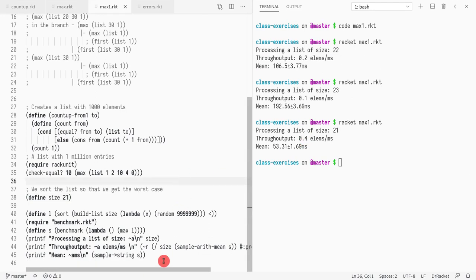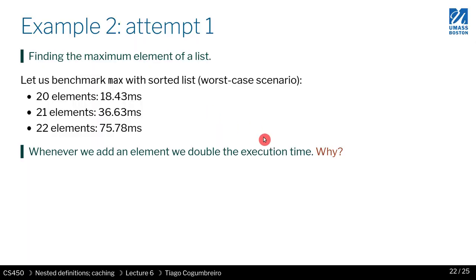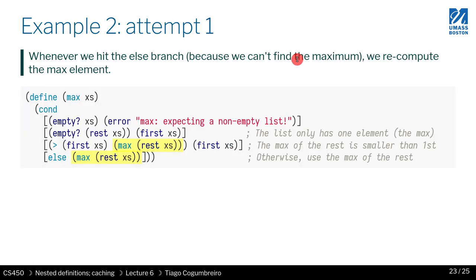So this is a great tale to figure out that the code we wrote is actually terribly bad because it blows up exponentially. So we have these stats. Whenever we add an element we double the execution time. Why? So we have an exponential going on. And why is that? Let's think about it.